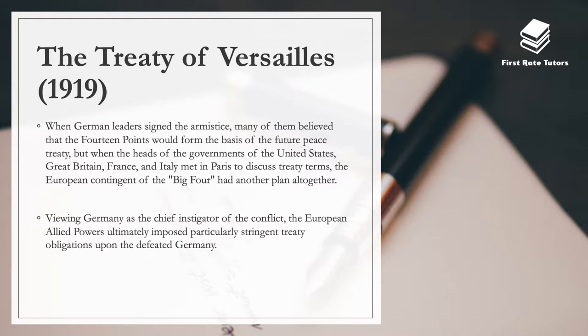When German leaders signed the armistice — the agreement to end the First World War — many believed that the 14 Points would form the basis of the future peace treaty. But when the heads of government of the US, UK, France and Italy met in Paris at the Paris Peace Conference to discuss treaty terms, the European Big Four had another plan altogether, and Germany was excluded from this. Viewing Germany as the chief instigator of the conflict, the Allied powers ultimately imposed very stringent treaty obligations upon Germany.